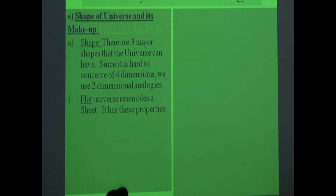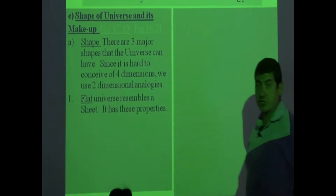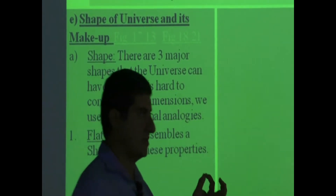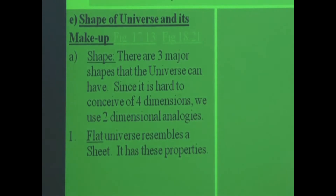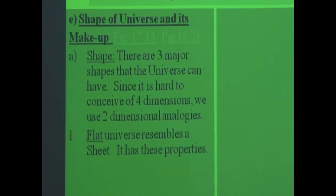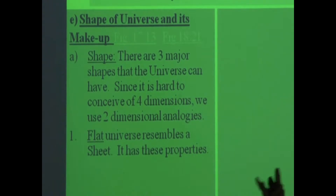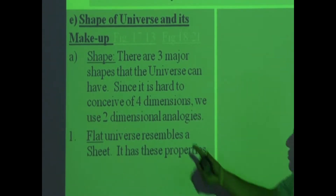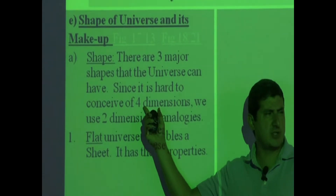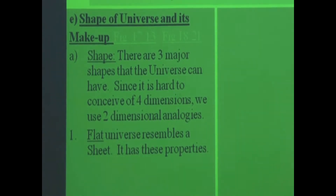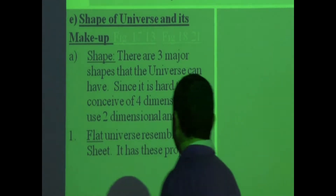There are three major shapes that the universe can have. Since it is hard to conceive of four dimensions — the universe has four dimensions: length, width, height, and time, which is the fourth dimension — it actually has seven more dimensions that are curled up, so the total dimensions of the universe is 11. According to string theory, you need 11 dimensions for the laws of physics to work out. Those other seven dimensions are very small, so the four dimensions are the big ones. In order to visualize how four-dimensional space can be flat, we try to visualize a two-dimensional space and ask how can a two-dimensional space be flat — then we can extend the concept from there.